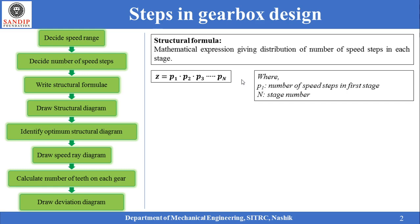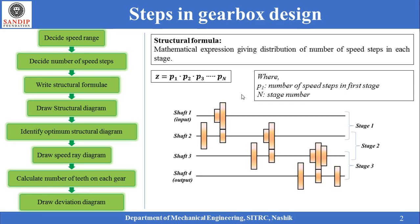Let us apply the structural formula to the compound gear train seen in the previous lecture. It is a 12-speed gearbox having 2 speed steps in the first stage, 2 speed steps in the second stage, and 3 speed steps in the third stage. Thus the structural formula can be written as 12 = 2 × 2 × 3.